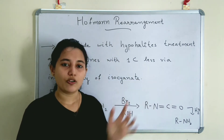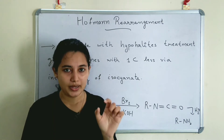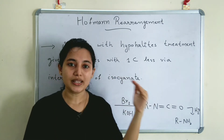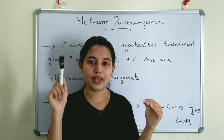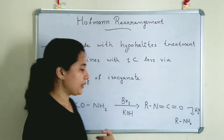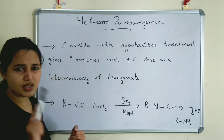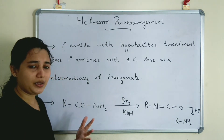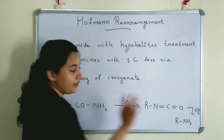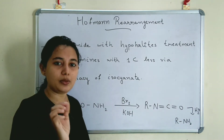So what is Hoffman Rearrangement? It is the conversion of a primary amide (R-CO-NH2) to a primary amine (R-NH2). One carbon atom will be less in the products.